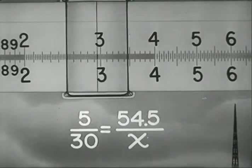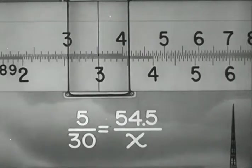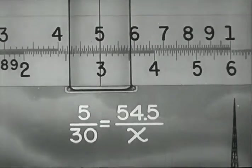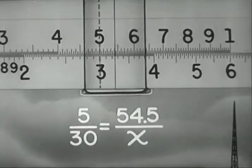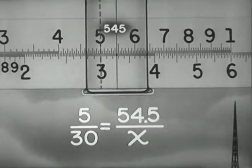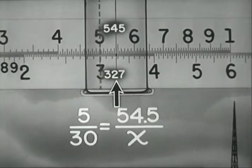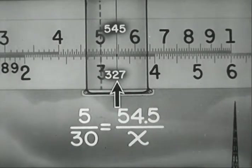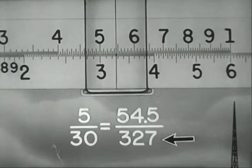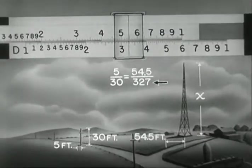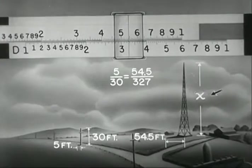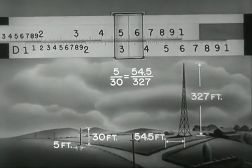To 3 on D, slide 5 on C. Push the hairline to 545 on C. Under the hairline, read the answer, 327 on D. The height of the tower is 327 feet.